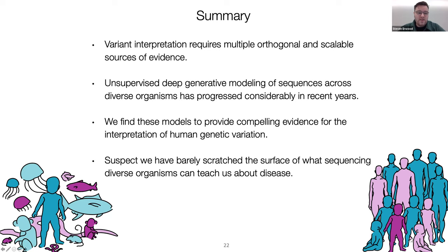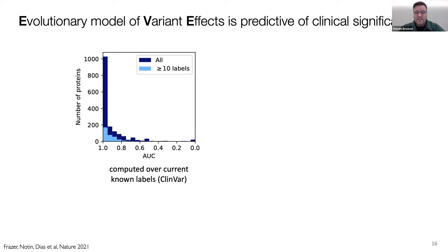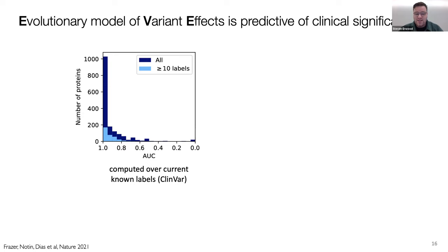When you showed the plot of the AUC values for the different, when you were benchmarking it to ClinVar, did you notice anything about the genes where the model wasn't doing so well? Like, might we be able to infer anything about the evolution of those genes? Like, if your model is performing very poorly, might that be informative about that gene? Or what might that mean?